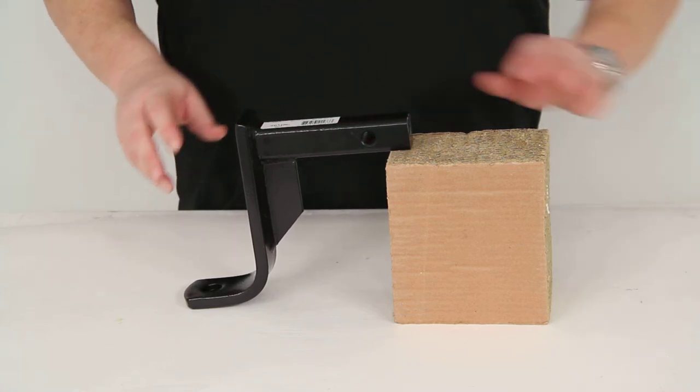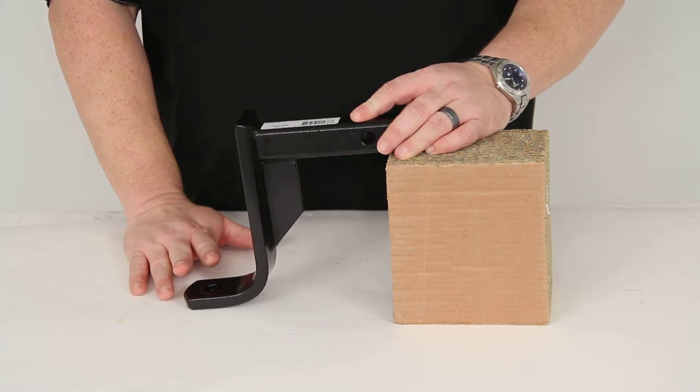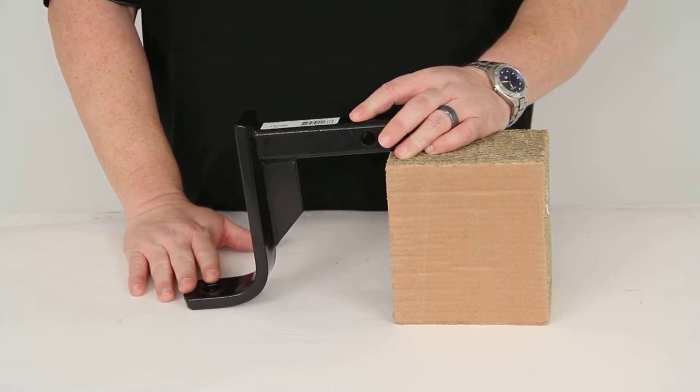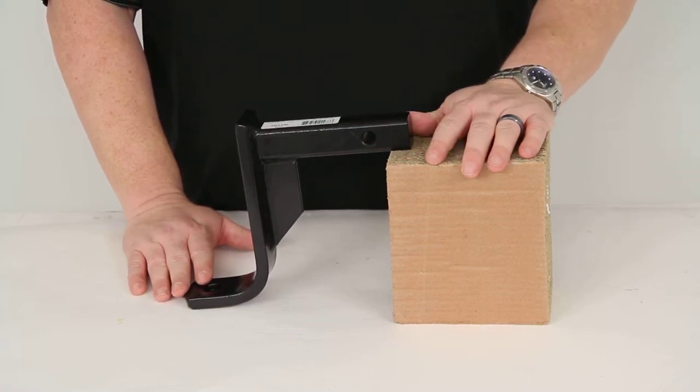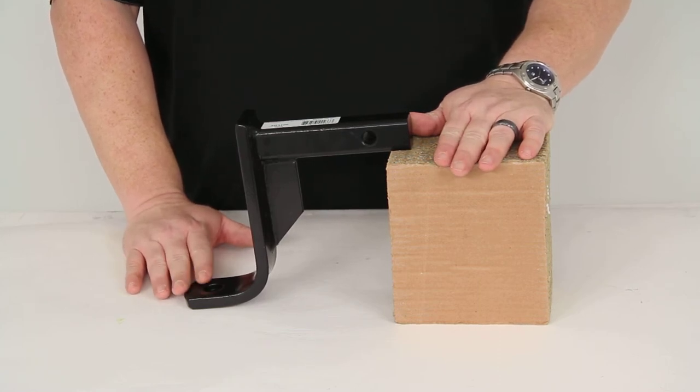This item is rated for 3,500 pounds of gross trailer weight and has a tongue weight of 300 pounds. It will require a pin and clip that's sold separately, but you can purchase that here at eTrailer.com part number PC2.